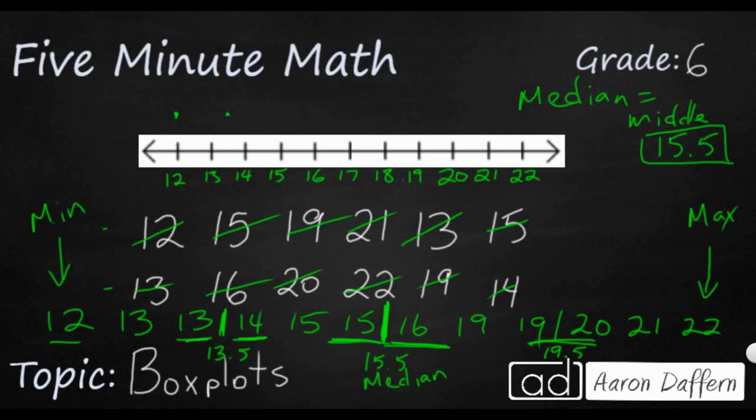So I've got 12, my 13.5, remember my 15.5. That is my median. Then it goes up to 19.5. And then the final is going to be 22.